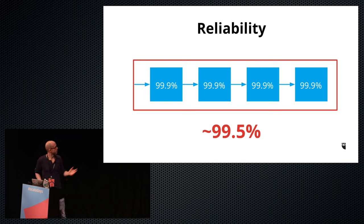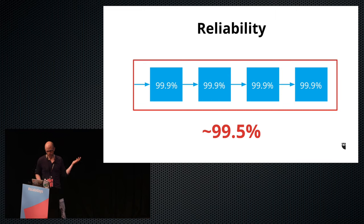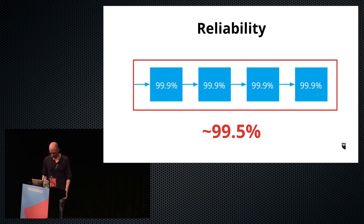The uptime of the entire service becomes the combined uptime of all services in the critical path. For example, if you have four services that each have 99.9% uptime — which is pretty good — the overall uptime of the whole chain is only 99.5%, which is not that good. That's sort of the difference between half an hour of downtime versus three and a half hours of downtime in a month.